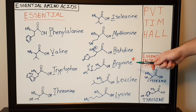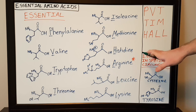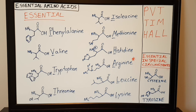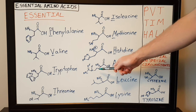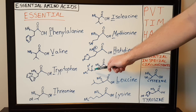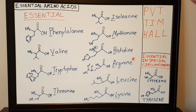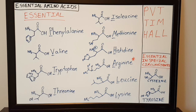The next essential amino acid is arginine, though it is not always considered essential — it's sometimes lumped in with the list. Arginine is another basic amino acid. It has a longer side chain consisting of three carbons with a triad of nitrogen atoms attached.